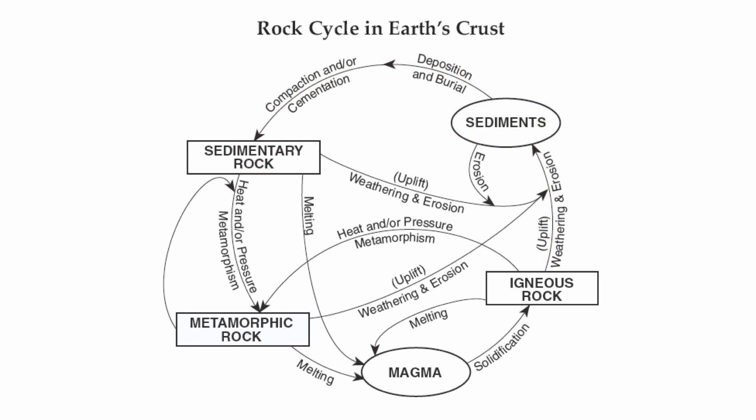Your metamorphic rocks undergo intense heat and pressure to make their type of rock. Those are the basic processes that make each individual rock type. Now let's look at how each rock is interconnected with the others.